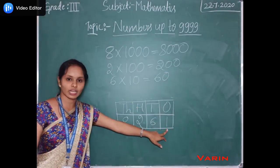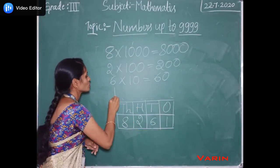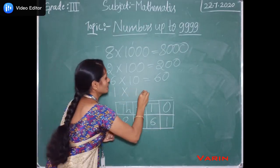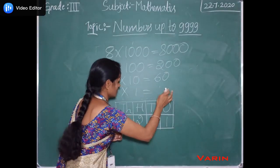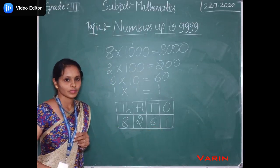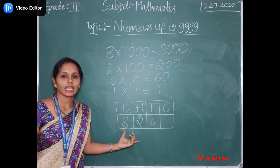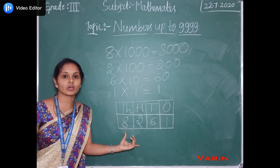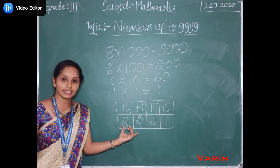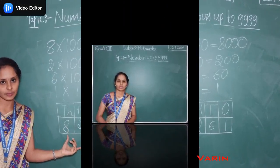And in the ones place, 1 is there. So we have to multiply it by 1. Place value means it depends on the position where the digit is present in the place value chart.